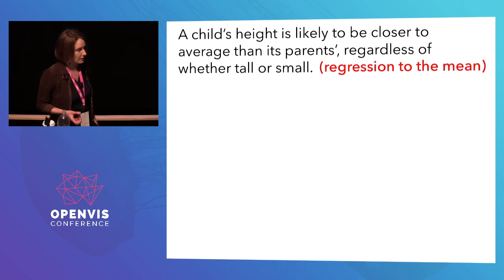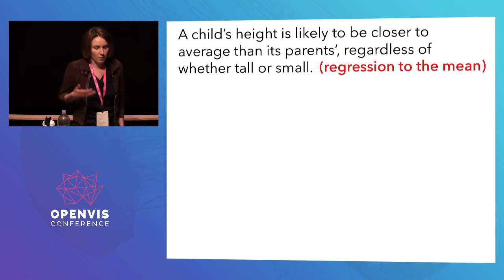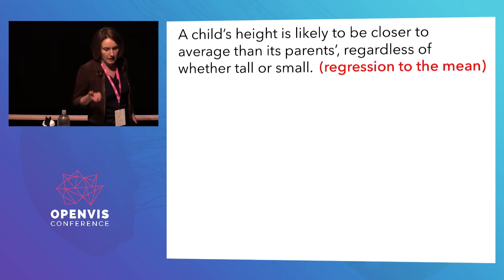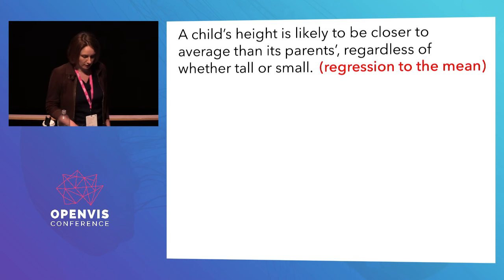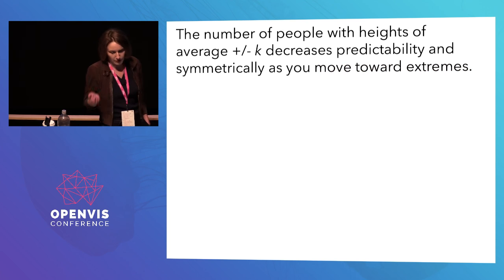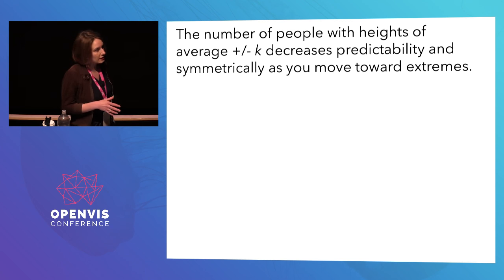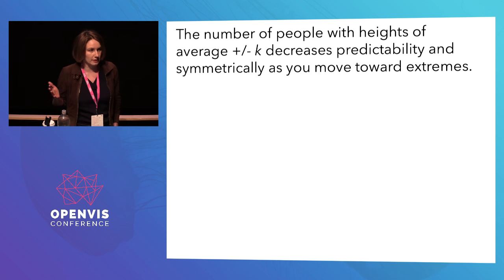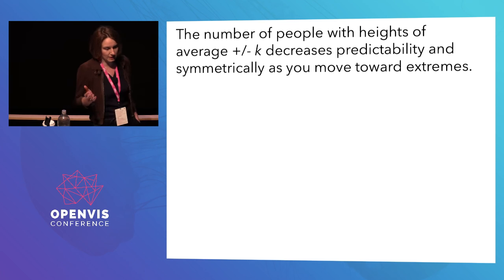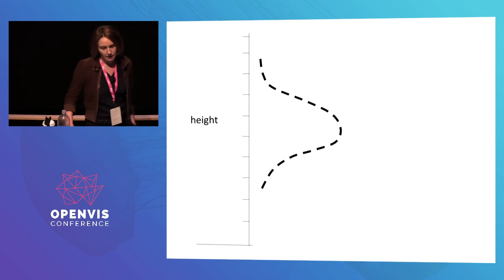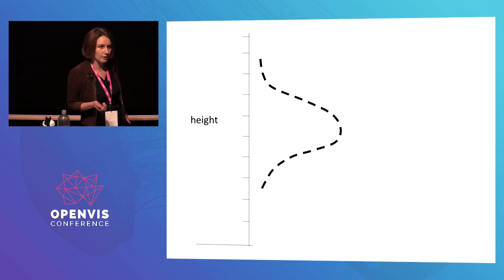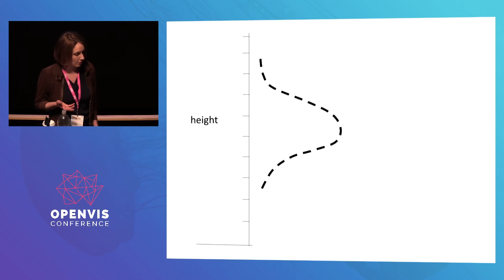Galton was really interested in this, and he started to think about what the set of possible heights looks like. He noticed that the number of people with heights near the average decreases predictably and symmetrically as you move toward the extremes. He starts to see this vision in his head, and it looks like a bell curve. What he had discovered was actually the normal distribution — you read it so that as you move further right, there's a higher probability of having that height.